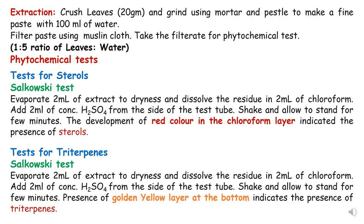The first step is extraction. Crush the leaves with water in a ratio of 1:5, as done in previous practicals. Grind the crushed leaves using a pestle and mortar to make a fine slurry or paste, then filter this paste using muslin cloth. Take the filtrate for the phytochemical test.